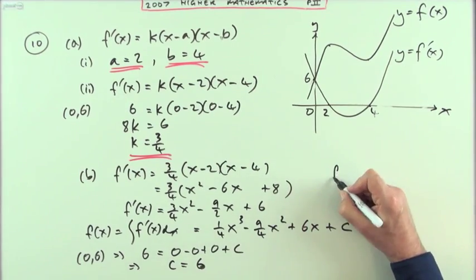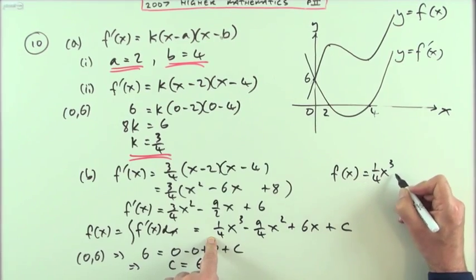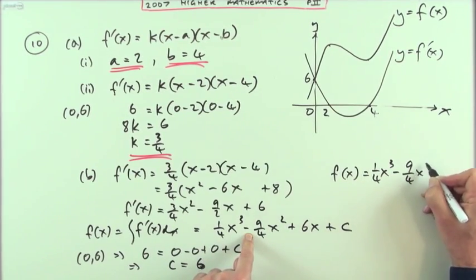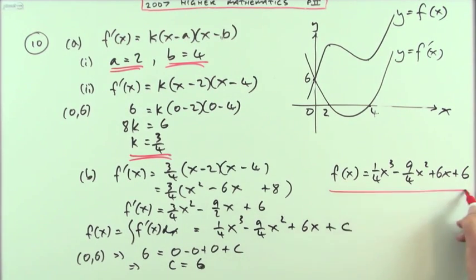So finally I'll just have to take a note over here. f'(x) is a quarter of x cubed minus nine upon four x squared plus six x plus six. That was alright.